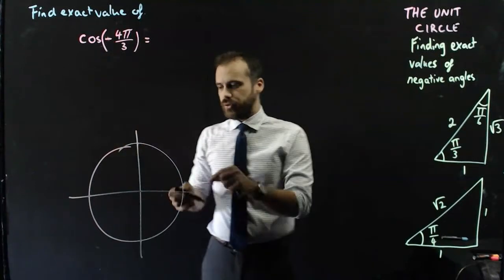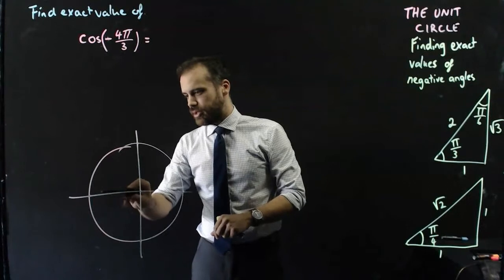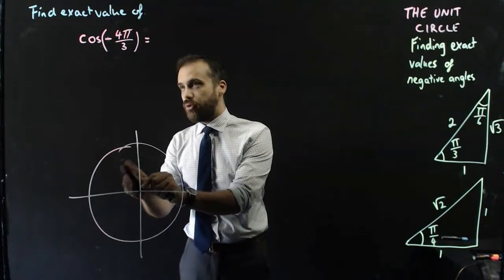So, negative 4π/3 is just π/3, 2π/3, 3π/3, 4π/3.